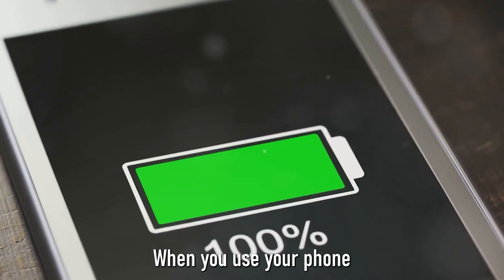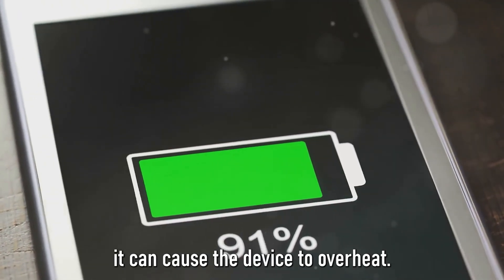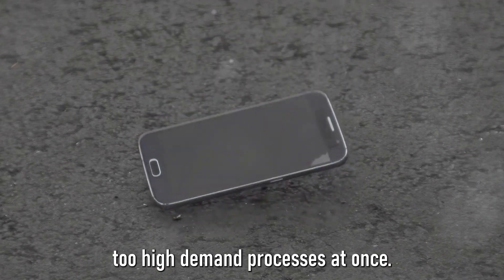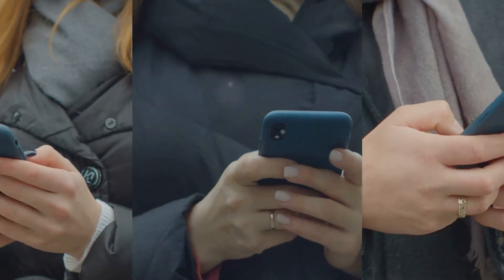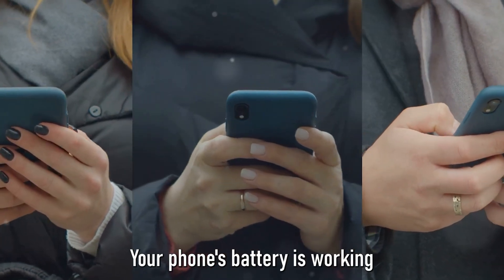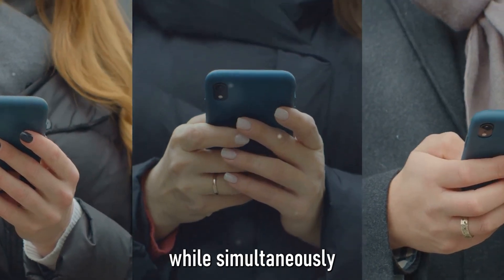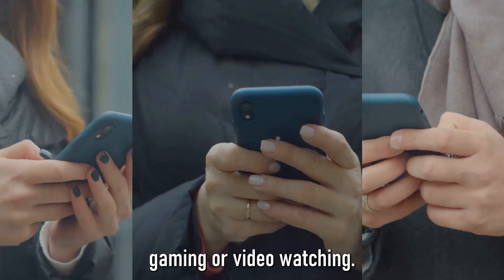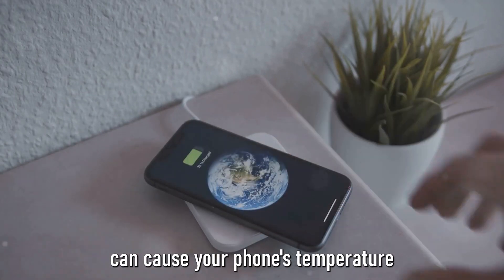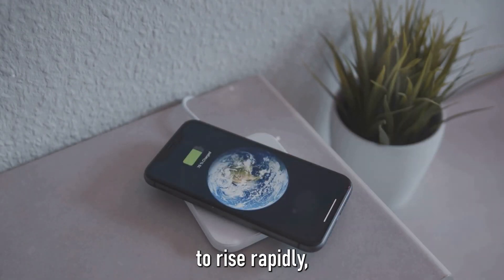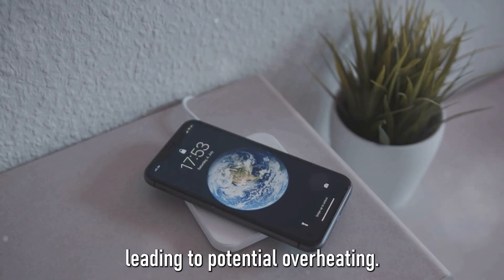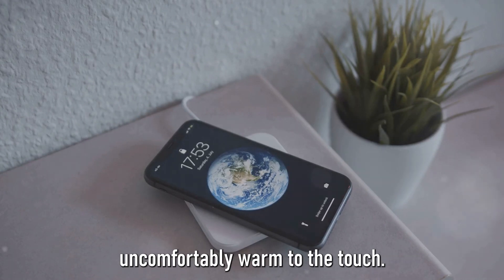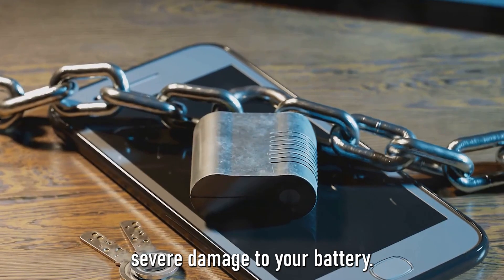When you use your phone while it's charging, it can cause the device to overheat. Think about it. You're essentially running two high-demand processes at once. Your phone's battery is working overtime to recharge while simultaneously trying to keep up with your scrolling, gaming or video watching. This double duty can cause your phone's temperature to rise rapidly, leading to potential overheating. Overheating doesn't just make your phone uncomfortably warm to the touch. It can also cause severe damage to your battery.